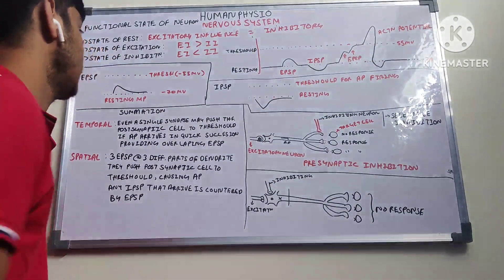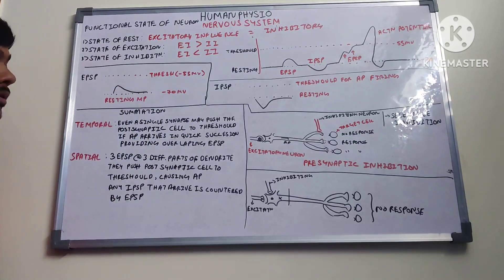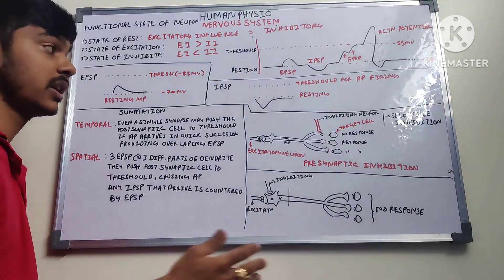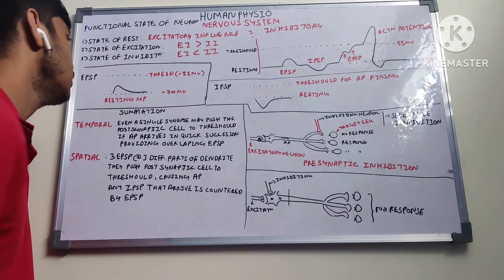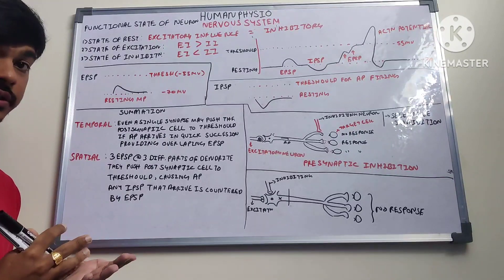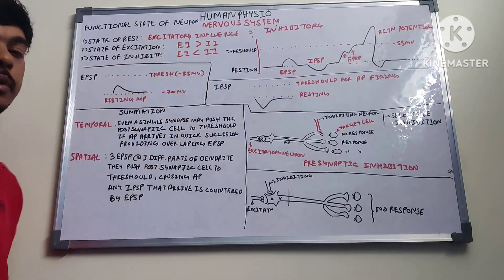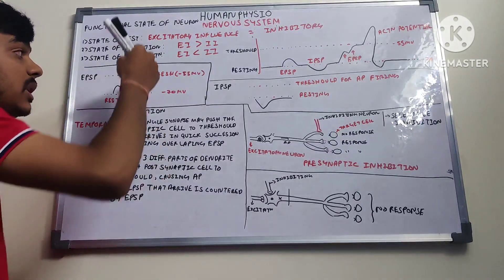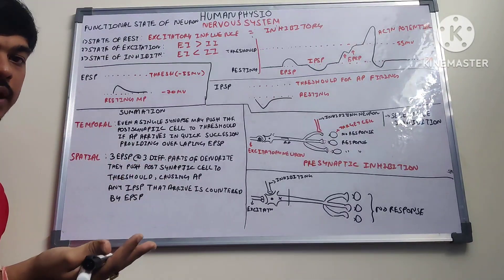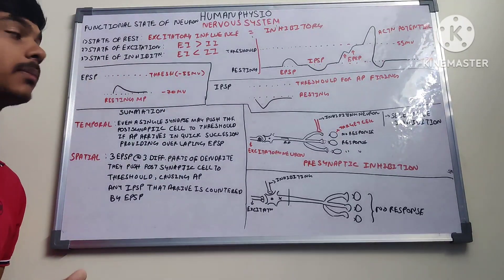Depolarization is when the cell moves from minus 70 to minus 55 millivolts — sodium influx takes place, and potassium moves out. For every one potassium entering, two sodium ions are given out, generating the action potential. In hyperpolarization, potassium moves out and sodium comes in, after which the cell returns to its resting state.